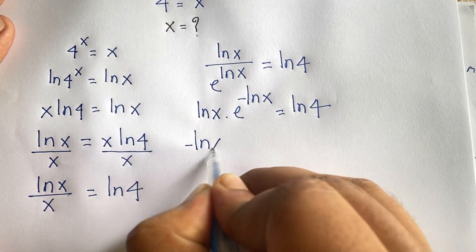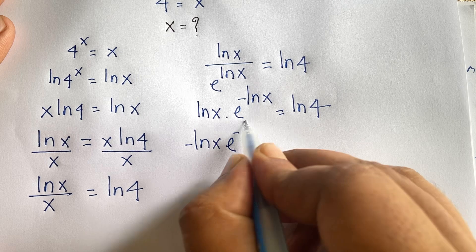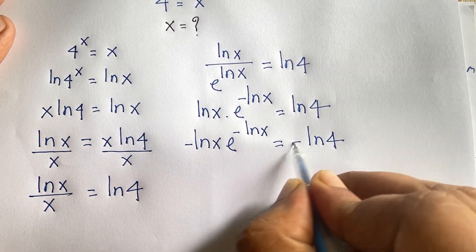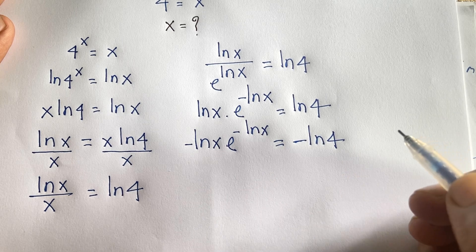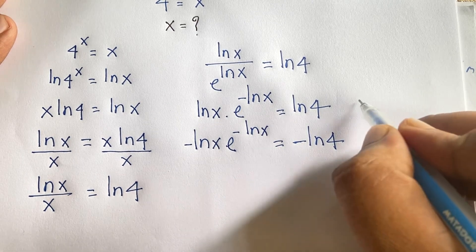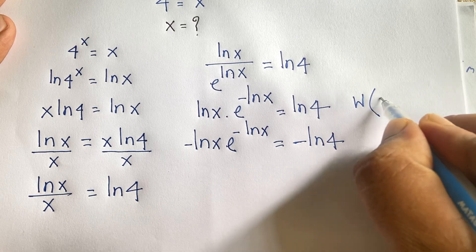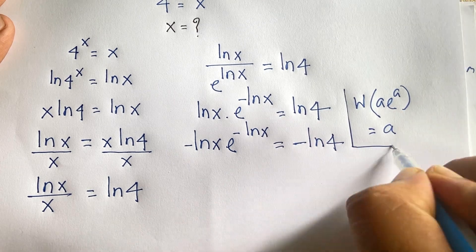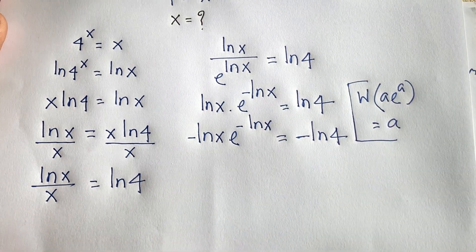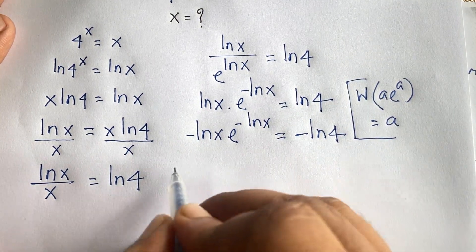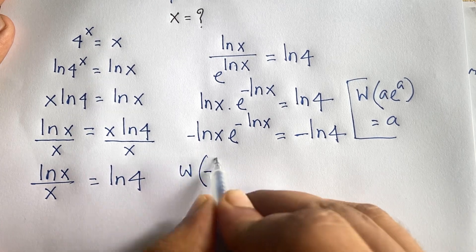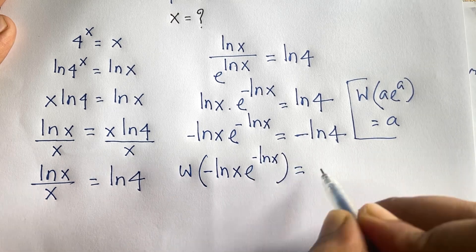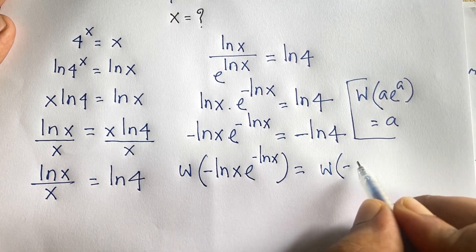Now I multiply both sides by minus one, so it will be: minus ln x · e to the power minus ln x is equal to minus ln 4. Because of that, I apply the Lambert W function on both sides. We know that W(a · e^a) = a. According to these rules, applying W on both sides: W of minus ln x · e to the power minus ln x equals W of minus ln 4.